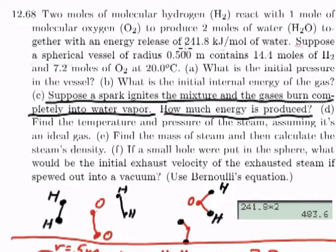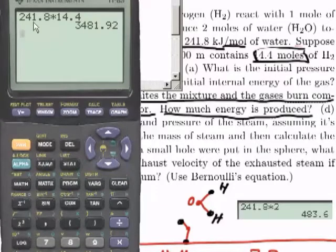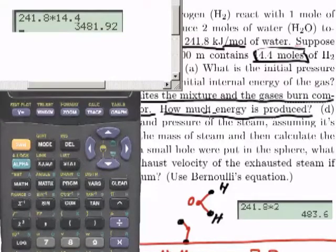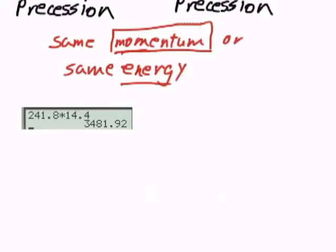Well, we've said that 241.8 kilojoules per mole of water. And we're going to produce, from the 14.4 moles of hydrogen, we're going to produce 14.4 moles of water. So I multiply that 241.8 times 14.4 and get 3481.92 joules of energy.